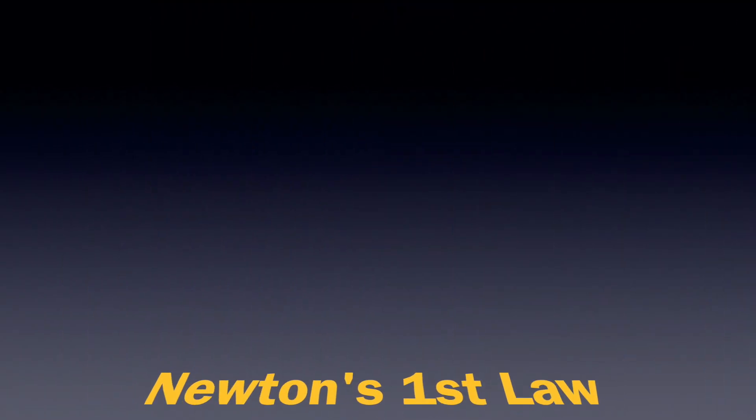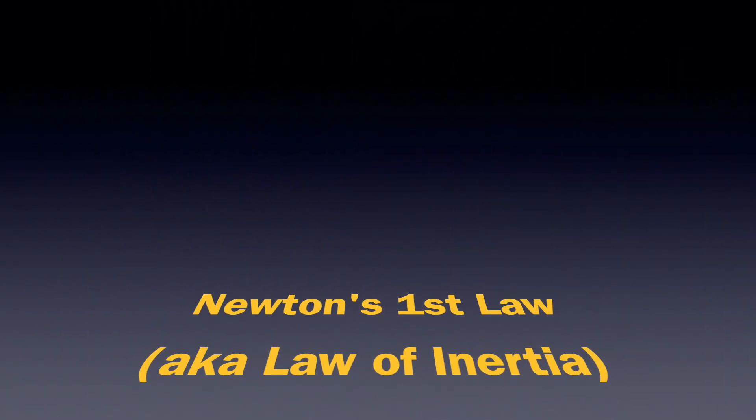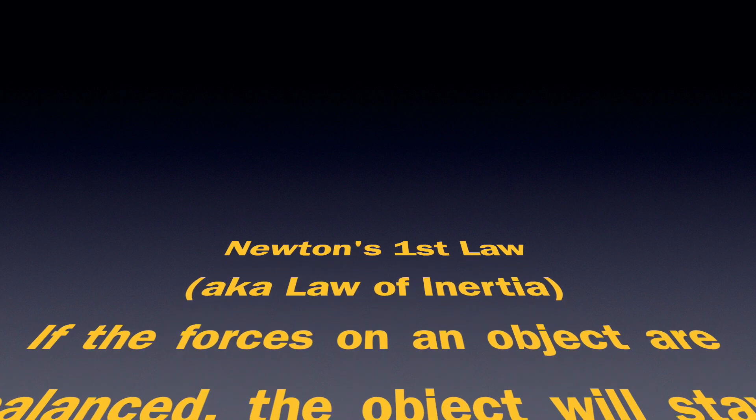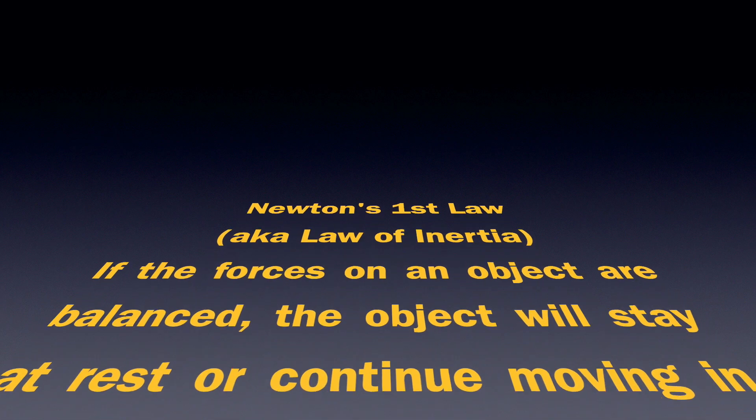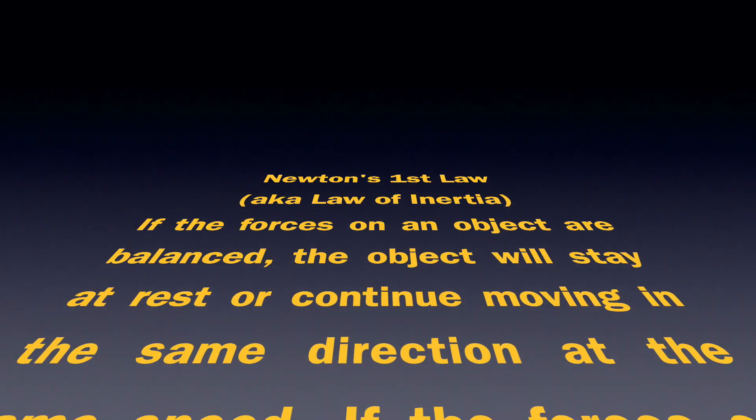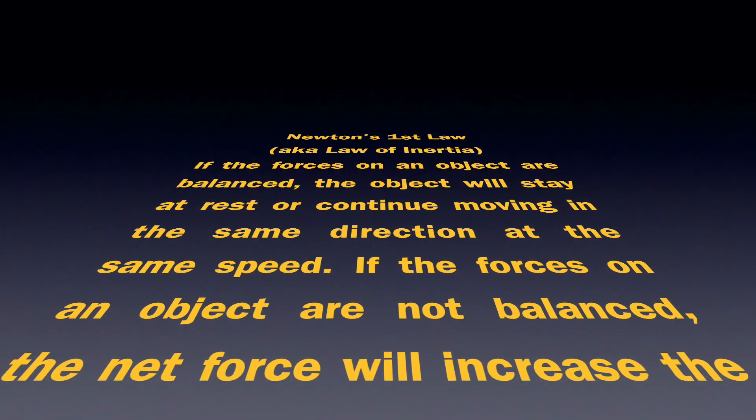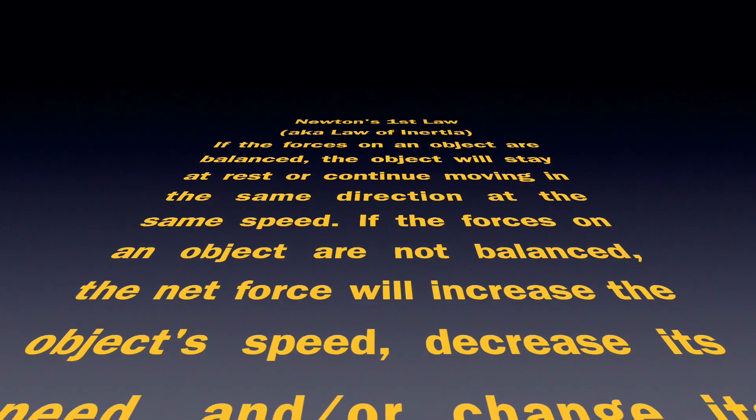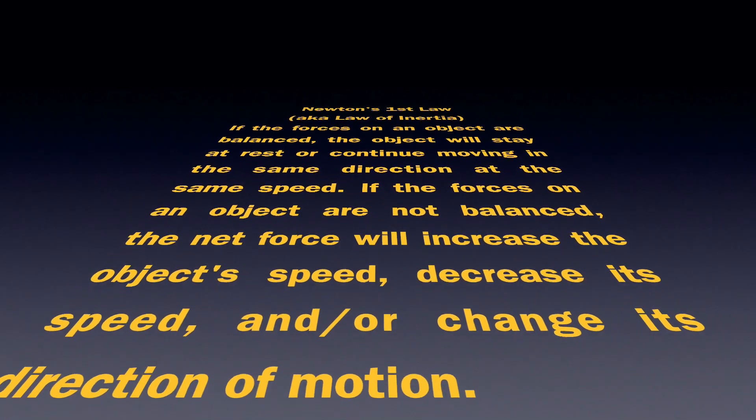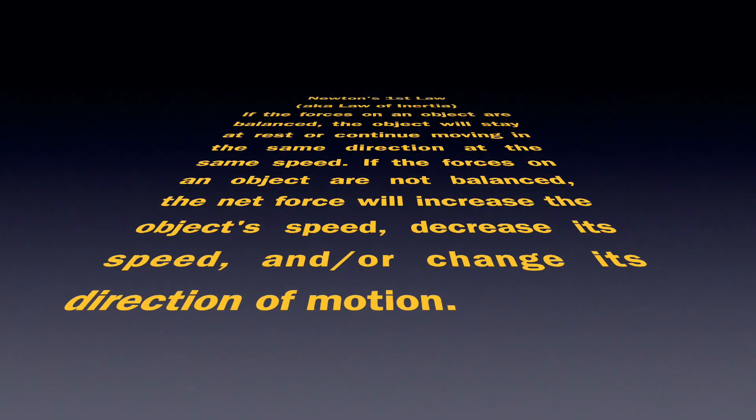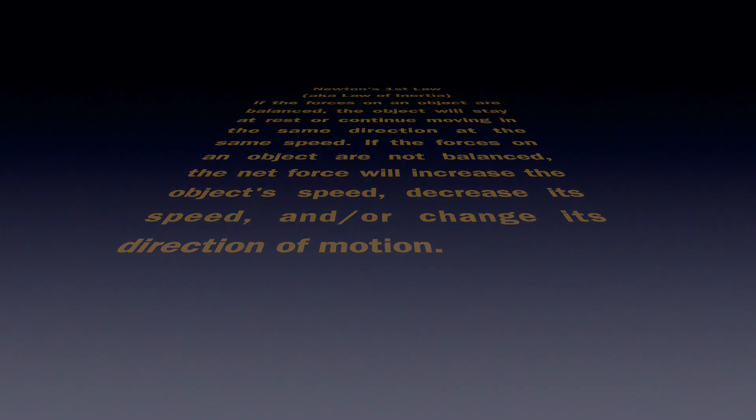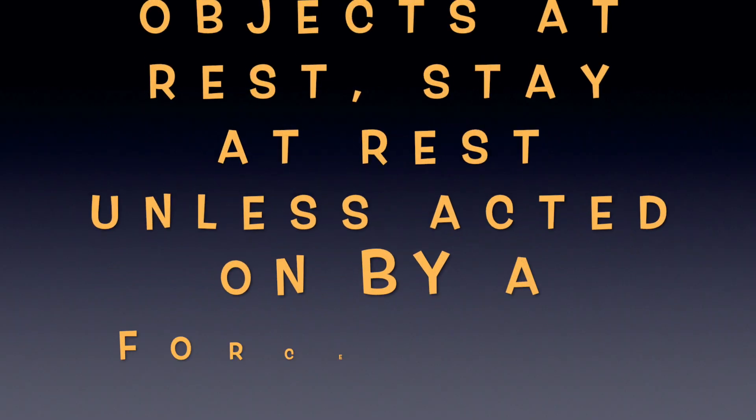If you look in the glossary of your textbook for Newton's first law or the law of inertia, it says if the forces on an object are balanced, the object will stay at rest or continue moving at the same direction and the same speed. If the forces on an object are not balanced, the net force will increase the object's speed, decrease its speed, and or change its direction of motion. That was a lot.